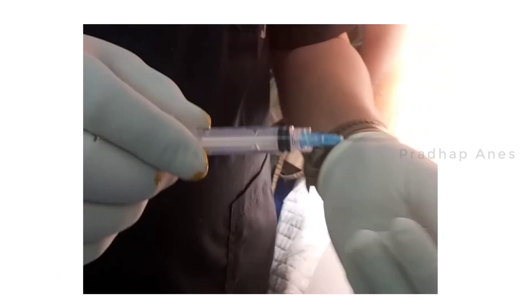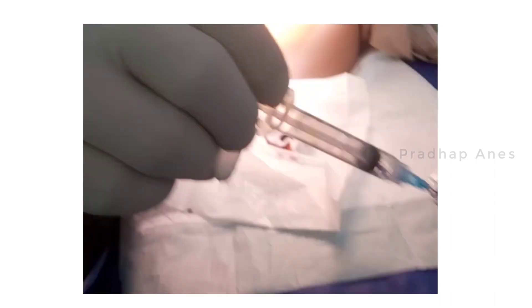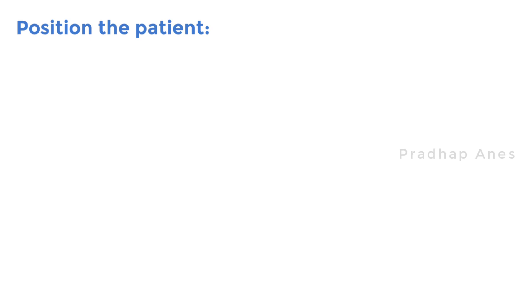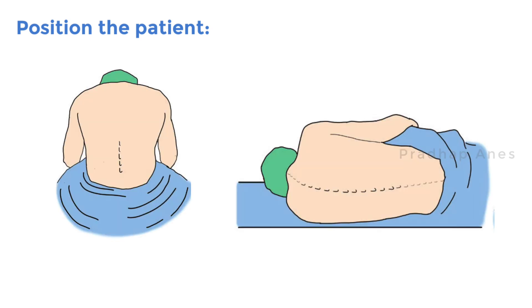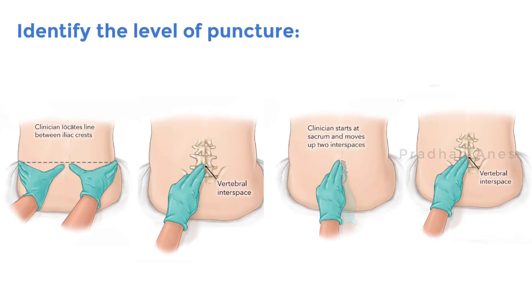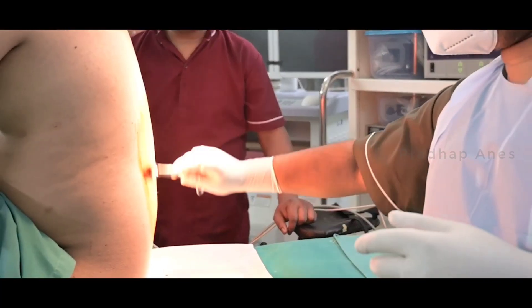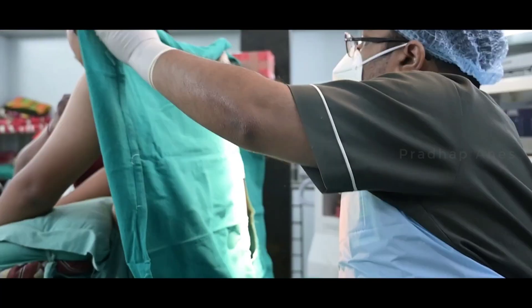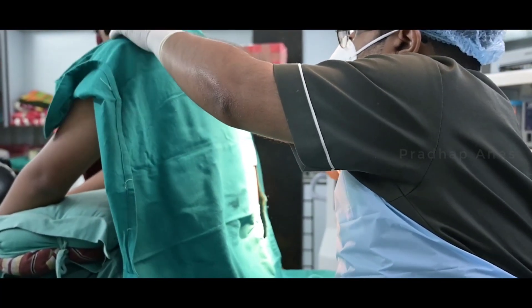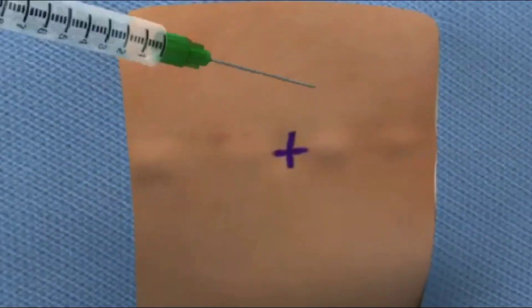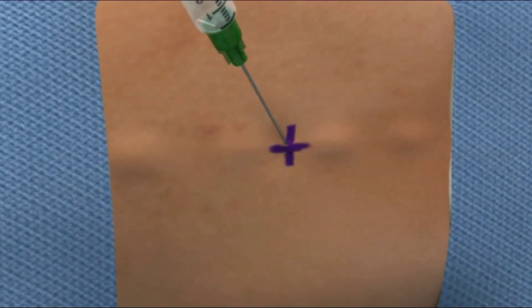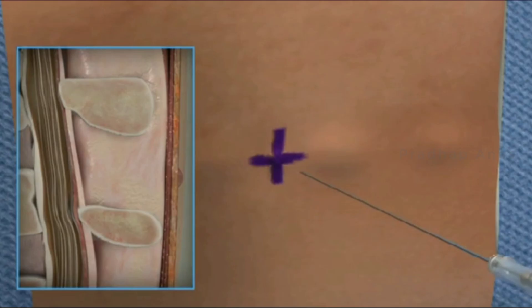Draw up the local anesthetic to be injected intrathecally into the 5ml syringe from the ampoule opened by the theater assistant. Position the patient in a sitting or lateral position. Identify the level of puncture by palpation of bony landmarks. Then clean the skin with an antiseptic solution and drape the patient with sterile drapes. If needed, infiltrate the skin and subcutaneous tissue with local anesthetic.